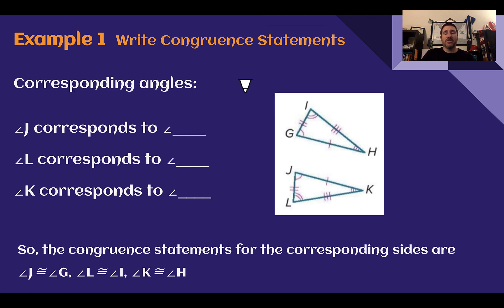For the corresponding angles, we're going to look for the arcs. So angle J here has one arc. Which one does it correspond with? That would be angle G. Angle L has two arcs. So that must correspond to angle I. And K has three. So it must correspond with angle H. Our congruent statements then. Angle J is congruent to angle G. Angle L is congruent to angle I. Angle K is congruent to angle H.